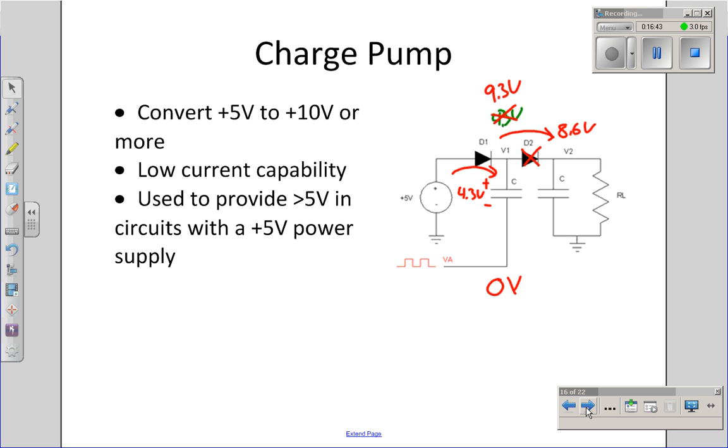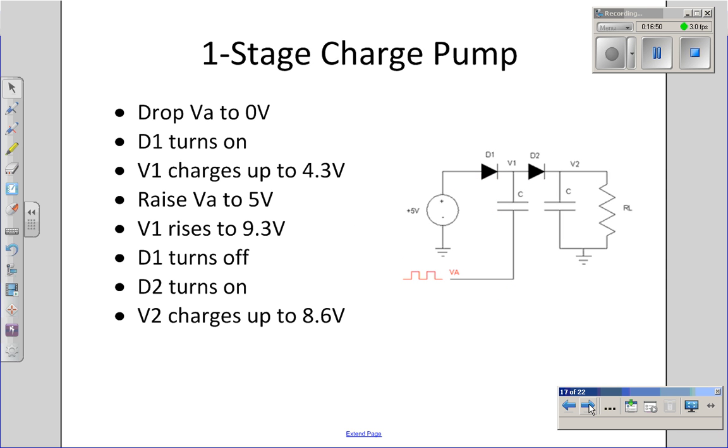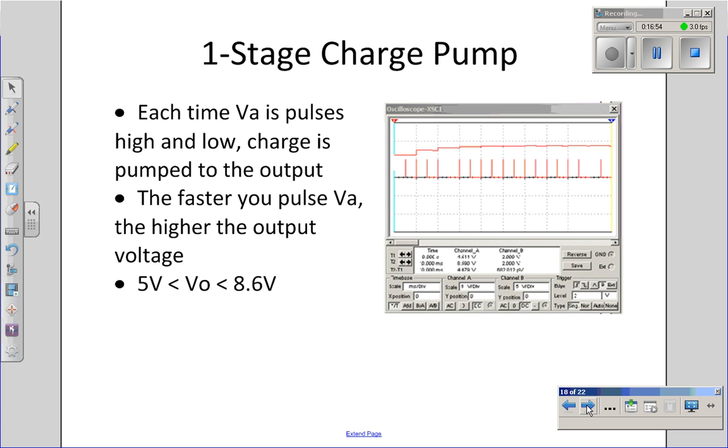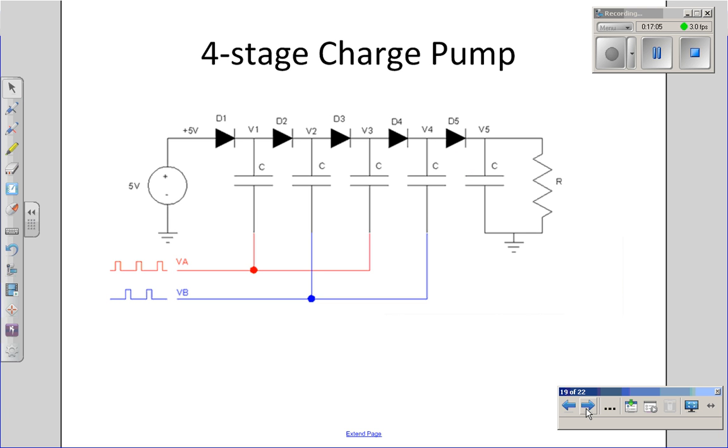A single charge pump with a single input can take your 5 volt source and bump it up to 8.6 volts. If you simulate that circuit, you can kind of see every time I send a square wave to VA, the output voltage increases.